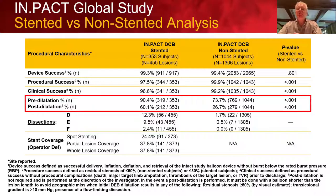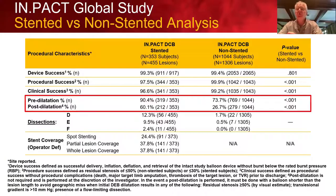Procedural characteristics showed high success in both groups with no significant difference. Procedural success was slightly higher in the non-stented group, as expected for simpler disease. Pre-dilation was more common in the stented group due to greater complexity and calcification. Post-dilation was also more common in the stented group. Dissections were more common in the stented group, as expected, thus leading to the stenting. Stent coverage ranged from spot, partial, to whole lesion coverage.